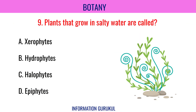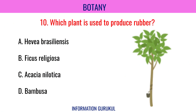Plants that grow in salty water are called halophytes. Which plant is used to produce rubber? Hevea brasiliensis.